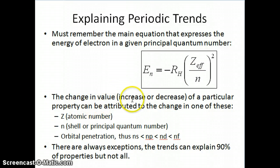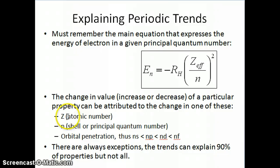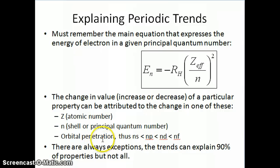The change in value we observe — whether it's an increase or decrease in a property like ionization energy or electron affinity — can usually be attributed to: the change in atomic number Z (the number of protons in the nucleus), the change in N (the principal quantum number or shell), and important effects from orbital shielding and penetration. Penetration is specifically important because an S orbital of a given shell is always more stable than a P orbital of that same shell — for example, 2S is always more stable than 2P.